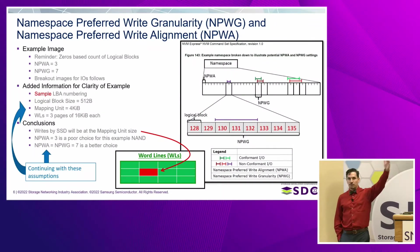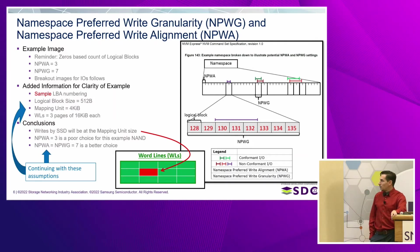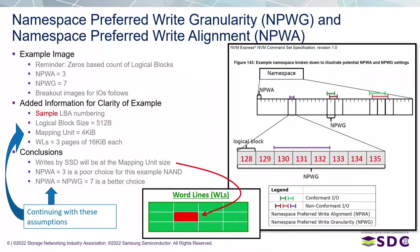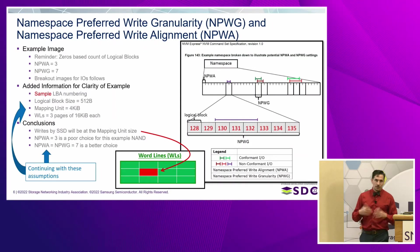Now, having moved through drive architecture assumptions and example fill sequences, I want to speak through write granularity and write alignment. I have images from the spec with some notations added — the only addition is the logical block numbering I put in red. Looking at the spec, I want to understand how these parameters come back to actual NAND parameters and their impact. For example, with a 512-byte sector, if logical block numbers 128 through 135 are being written, but the host only wrote 130, 131, and 132, they're doing a write that needs to modify a 4-kilobyte size sector on the NAND.